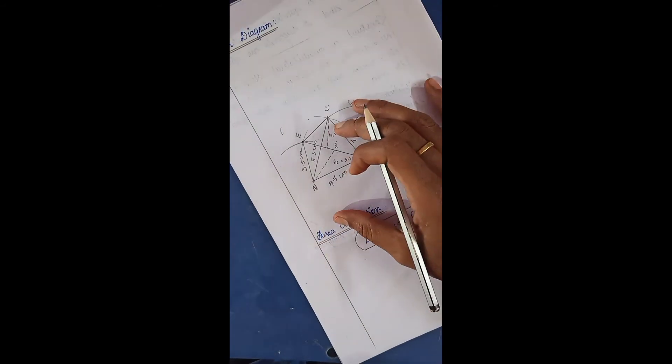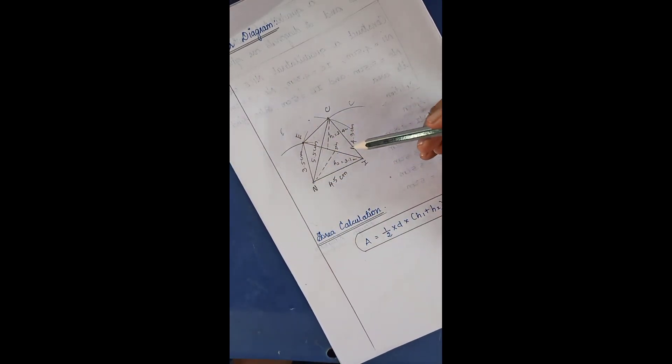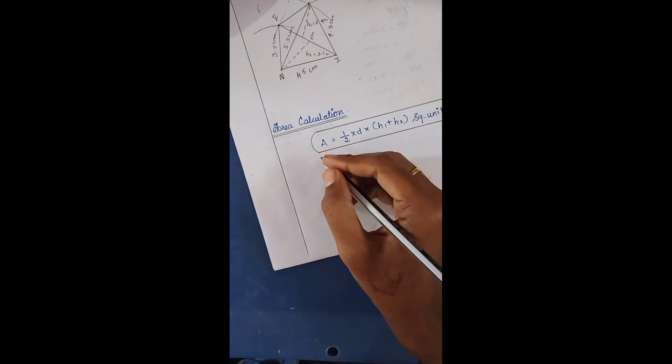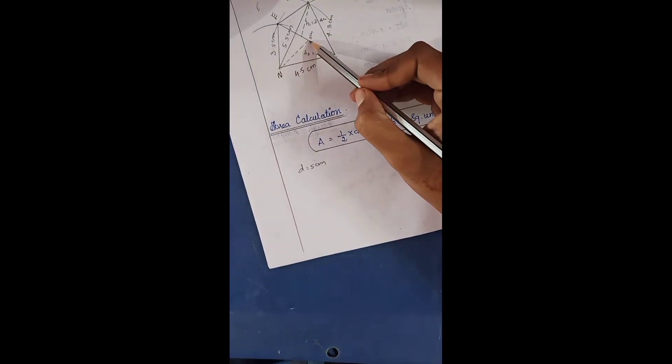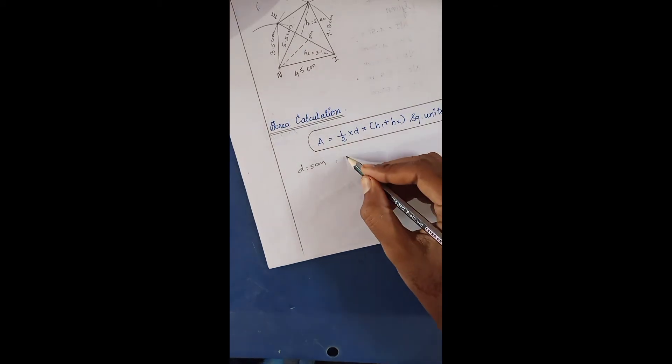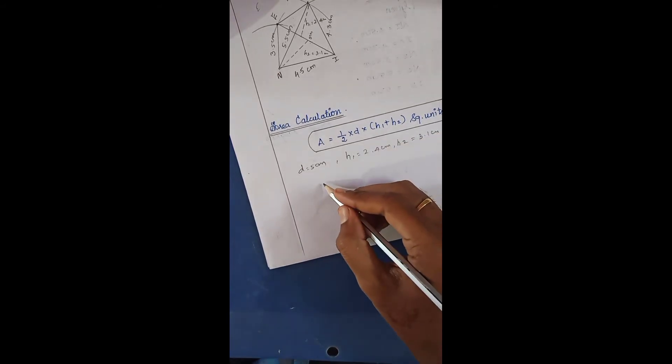This is a very important point. When calculating the height, the height must be perpendicular from the corner point to the diagonal. The heights are touching the IE diagonal, so d = 5 cm. Therefore: d = 5 cm, h1 = 2.4 cm, h2 = 3.1 cm. Now I am going to substitute these values in the formula.